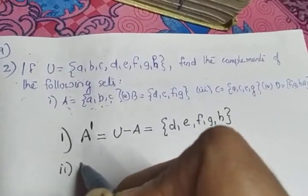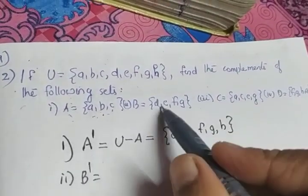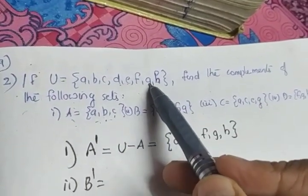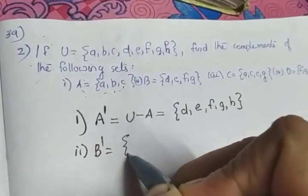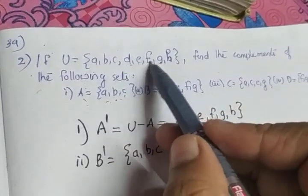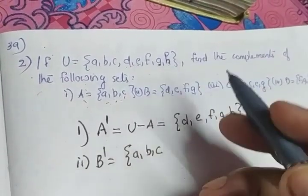Second part: What is B dash? B is given as {d, e, f, g}. So we remove d, e, f, g from U. So B dash will be equal to {a, b, c, h}.